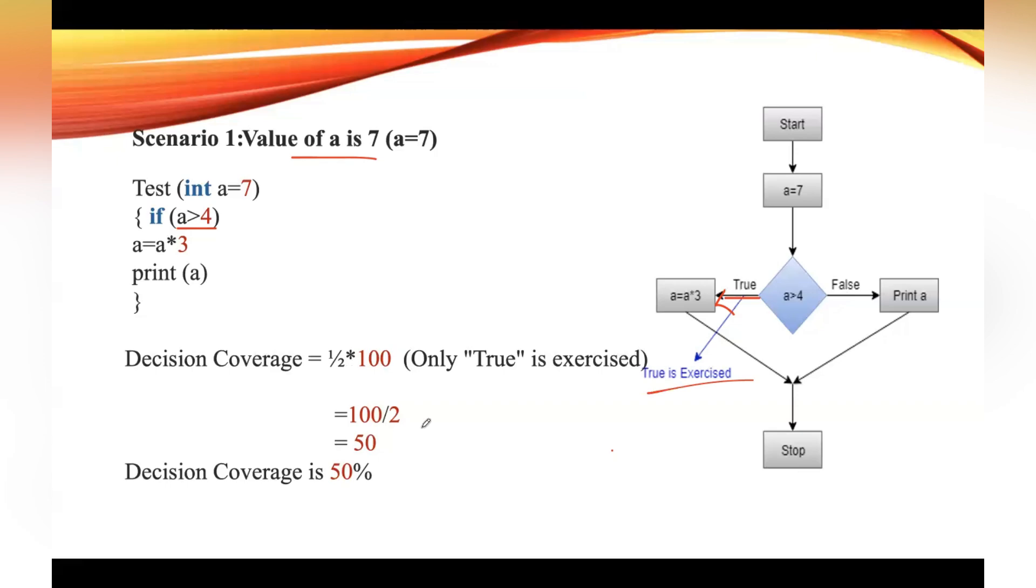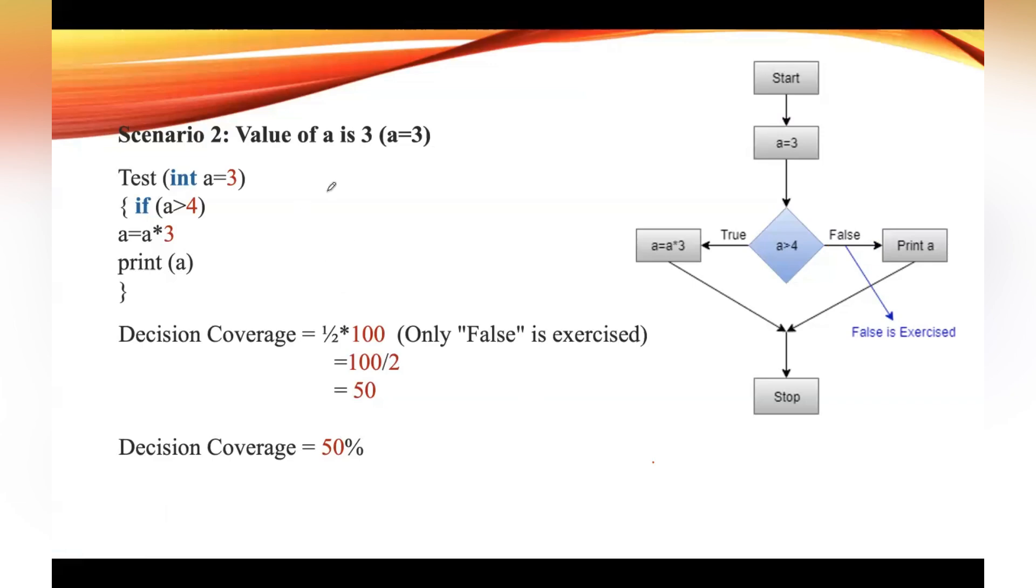Decision coverage is 50% in this case. Let us take the second scenario where we have considered value of a as 3. This is the control flow graph and the value of a is 3. If value a is 3, then 3 is greater than 4, condition false.